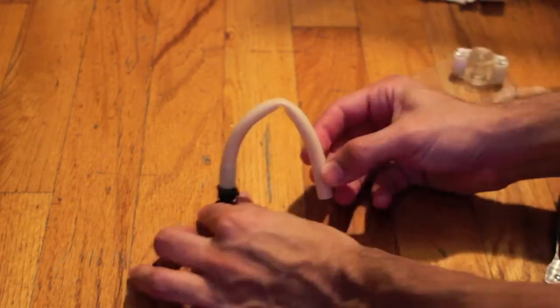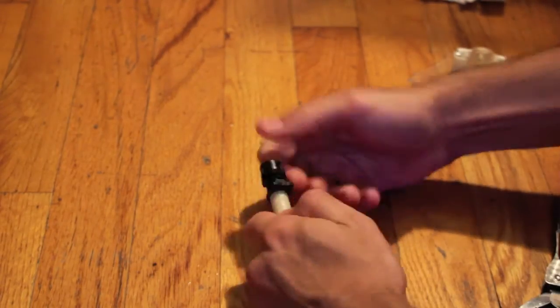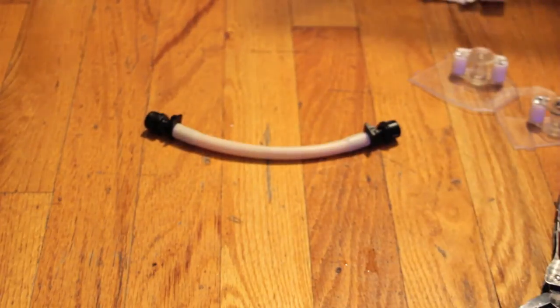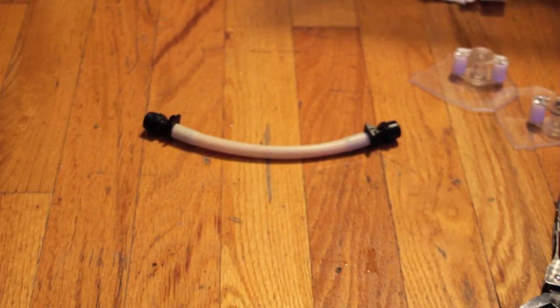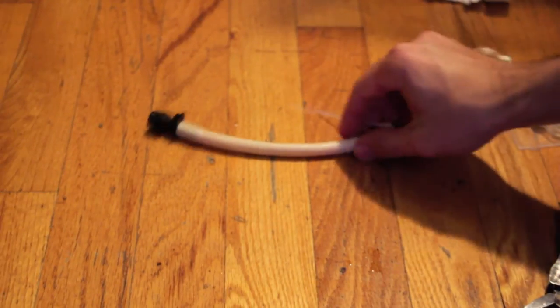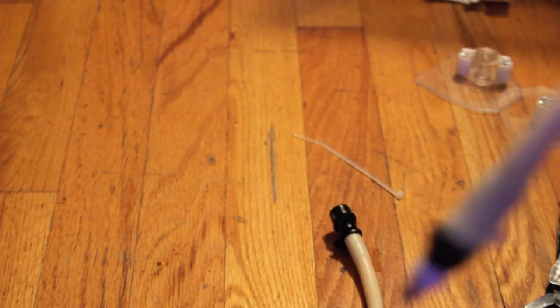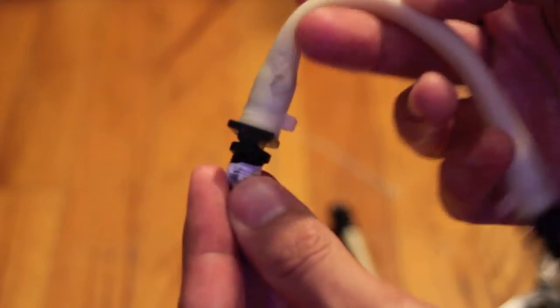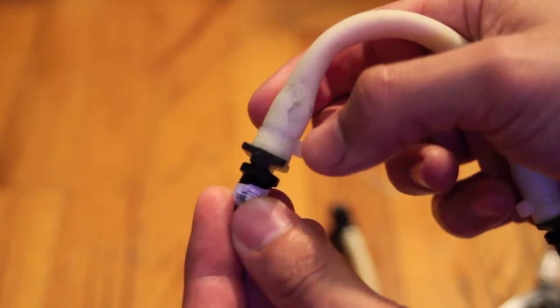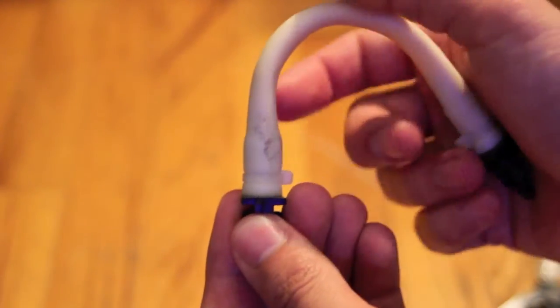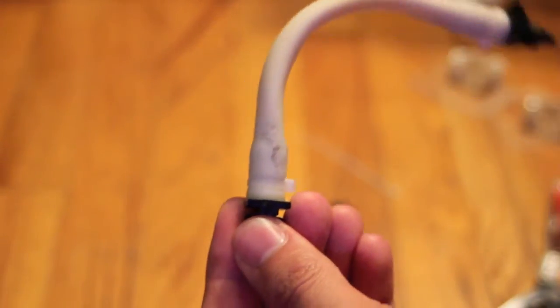Gonna get your two zip ties. Now remember, you gotta be careful. Take note again - I'm gonna zoom in up close. All right, where the zip tie is positioned here, okay? Because if you put it on the back end, it's not going to sit in the doser the right way and it's not going to work properly.